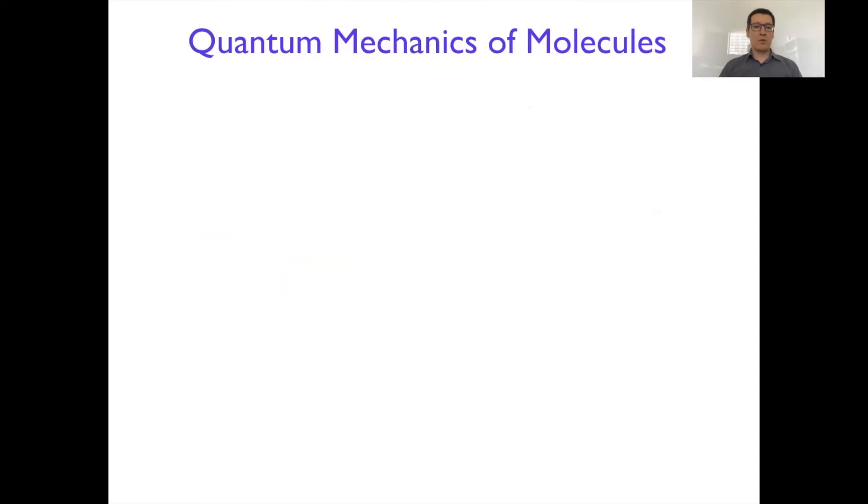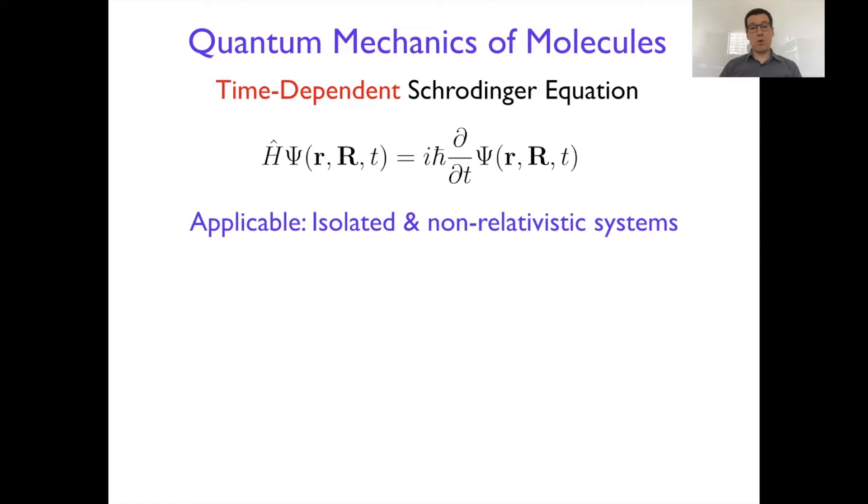When it comes to quantum mechanics of molecules, one of the main equations that everyone starts with is time-dependent Schrodinger equation, which is applicable only when the molecule is isolated and non-relativistic, which means it doesn't have any heavy atoms, so mostly first few rows of the periodic table.